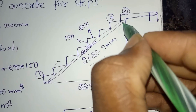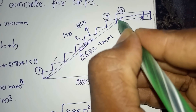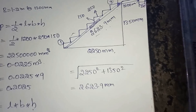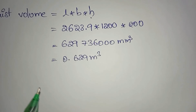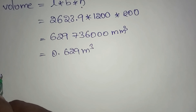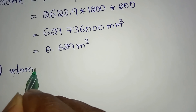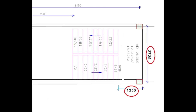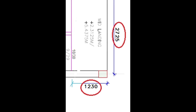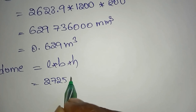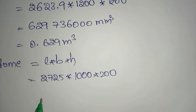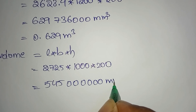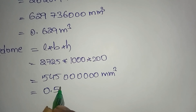Next, the midline. Here to here it is 1000 mm, 230, deep 300. So, midline volume using L×B×H. 2725 is the length, into 1000 into 200 as the thickness. Value is 545,000,000 mm cube, converted into meter cube: 0.545 meter cube.